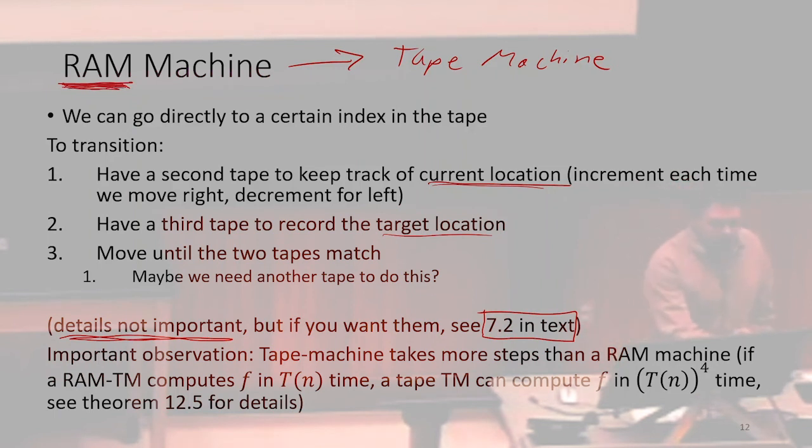So going forward, we're mostly going to be talking about this RAM machine model of computation rather than the tape model of computation because it'll make our lives easier. This allows us to have data structures or indexable arrays and that sort of thing if we have this RAM model of computation. If we don't have a RAM model of computation, then basically everything is just a linked list or something like that.